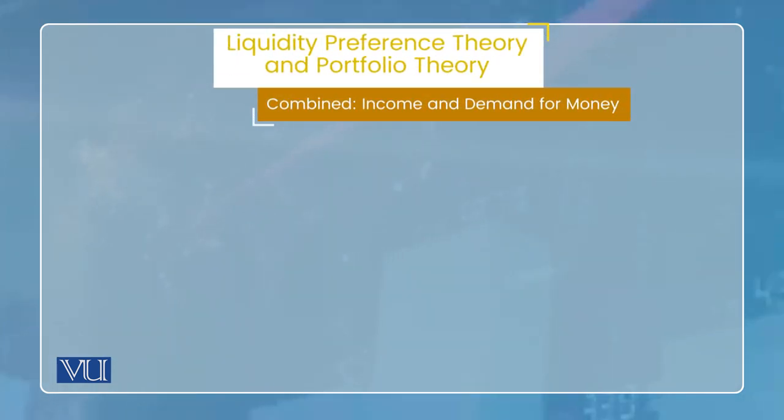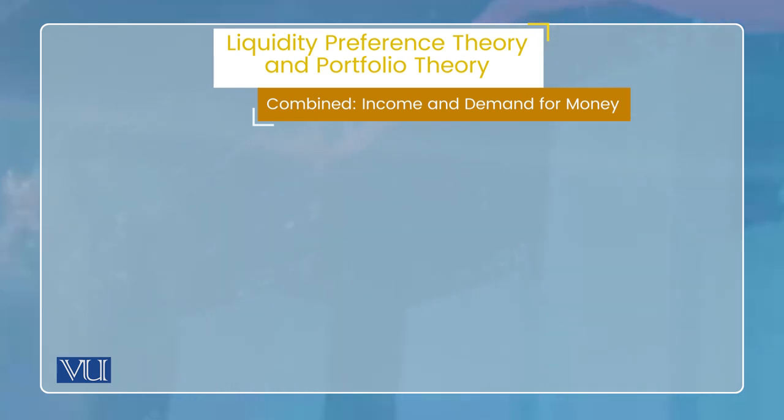इसमें यह भी जहन में रहे कि इसके कुछ points Keynes की liquidity preference theory से match करते हैं। मैंने उसको साथ add किया ताकि आपके जहन में यह confusion न हो कि ये तो उसने भी कहा था, इसने भी। दो theories में कुछ चीज़ें common हो सकती हैं — हमेशा पिछली theory को criticize करना ज़रूरी नहीं होता। जैसे Keynes की theory में transaction वाला motive वही है जो quantity theory of money में भी था, सिवाए इसके कि उसके determinant में थोड़ा फर्क है।